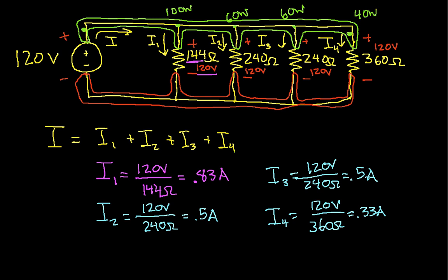So if I plug all of these numbers in and solve for I, I get that I is equal to 0.83 amps from I1 plus 0.5 amps, plus 0.5 amps, plus 0.33 amps, which is 2.16 amps. So what this says is that the voltage source, in order to keep 120 volts across each of the light bulbs, will have to put out a total of 2.16 amps.